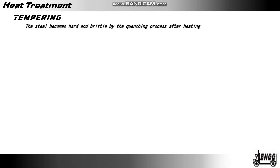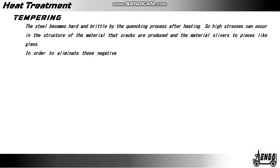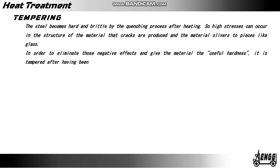The steel becomes hard and brittle by the quenching process after heating. High stresses can occur in the structure of the material, causing cracks, and the material shatters into pieces like glass. In order to eliminate those negative effects and give the material useful hardness, it is tempered after having been hardened — that is, it is heated once again.